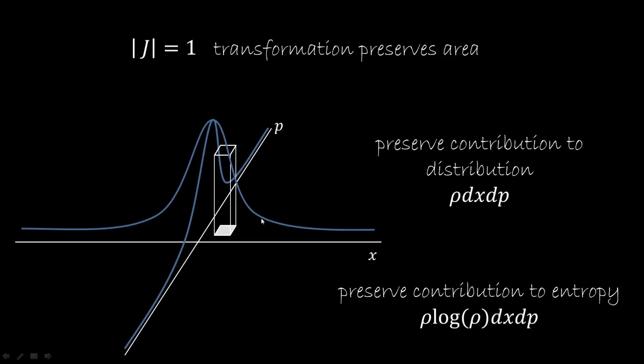But if the area would increase, then of course the rho would go down. But if rho goes down, then the contribution to the entropy changes. And if the area shrinks, then rho would go up and it would change the contribution to the entropy. So the only way that we can preserve both the contribution to the distribution and the contribution to the entropy is if rho remains the same and the area of course does not change.